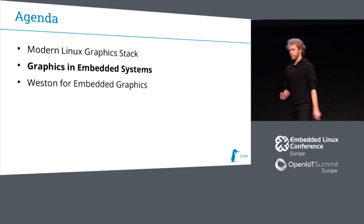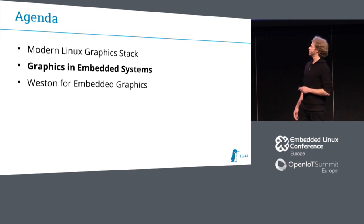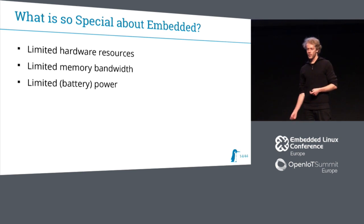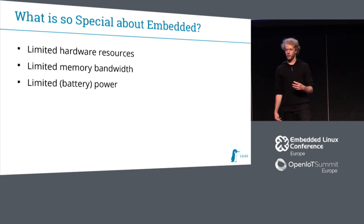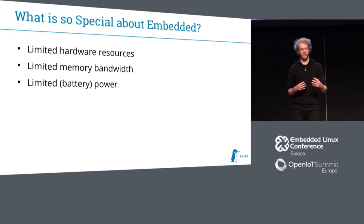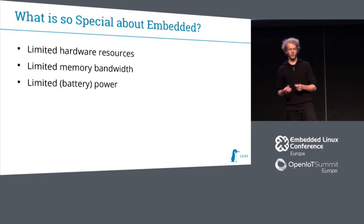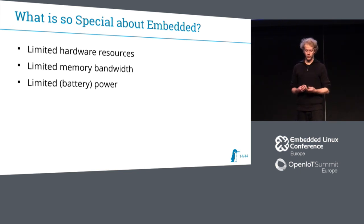Now, if we go to embedded — what is different about embedded? We have limited hardware resources, especially limited memory bandwidth, and all the different hardware resources use the memory. So the more hardware resources we are using, the less memory bandwidth we have left. That's really the constraining factor. And in many cases we have limited power, so we are battery driven.